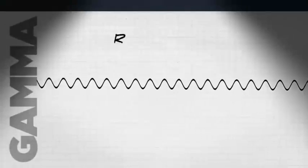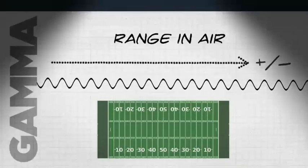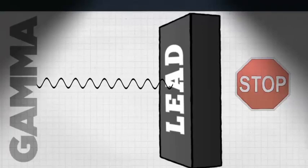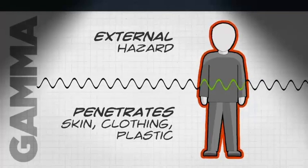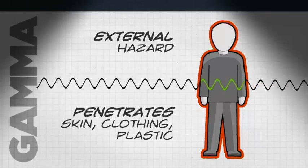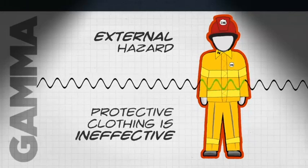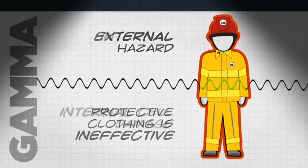Gamma rays have a long range—they can go many yards in air. It takes an inch or more of lead, several inches of lead, to block them completely. They're also an external hazard because they can penetrate through material, through clothing, through plastic. We'll talk later about how first responders need to be aware because their protective clothing won't protect them against penetrating gamma rays. It will take lead to block those.